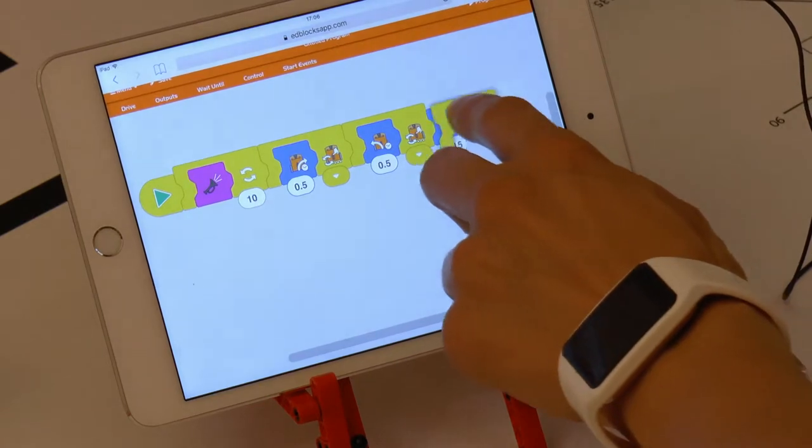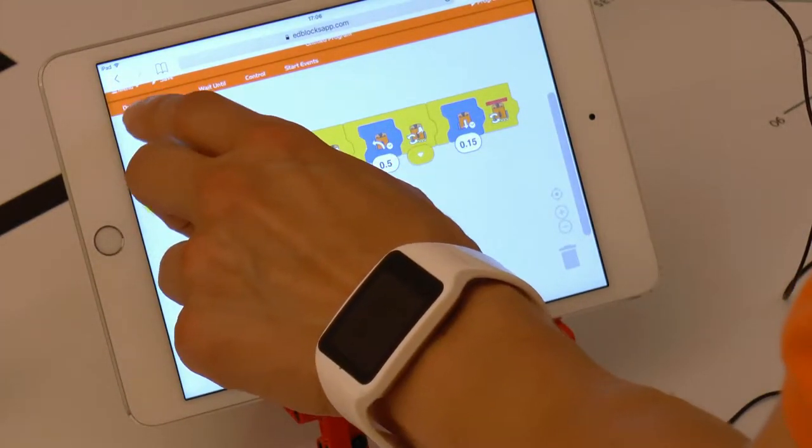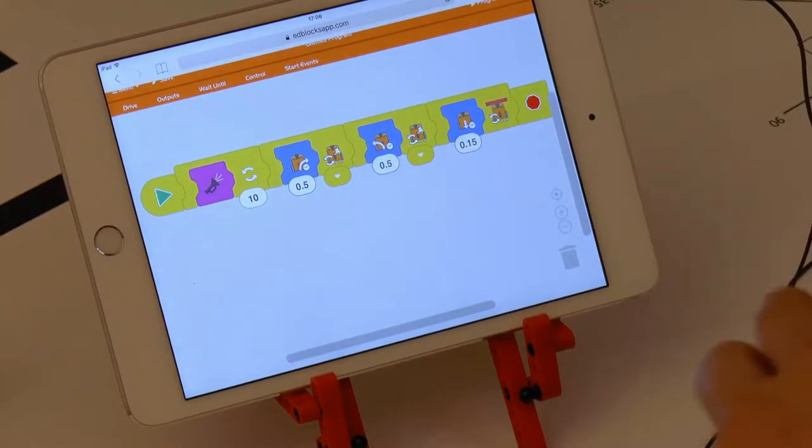Lastly, the robot drives backwards 0.15 seconds at a time until an obstacle is detected, after which it stops. In the very end I'll put an end program block.